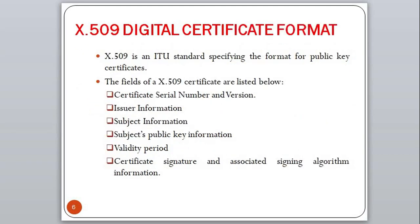Next we will go through the digital certificate format X.509. X.509 is an international telecommunication union standard specifying the format for public key certificates. The fields are: first, certificate serial number and version — each certificate issued by a CA has a unique serial number. Next is issuer information, which includes the certifying authority's name, email address, organization name, country, and other identity information. Next is subject information, which includes the certificate subject's name, country, state, organization, and email address.